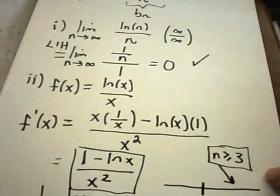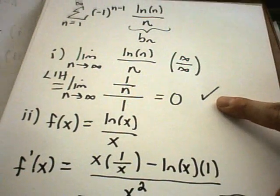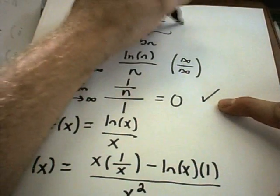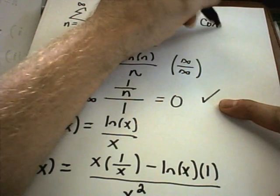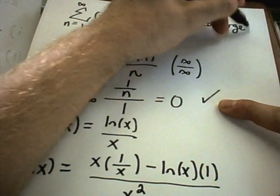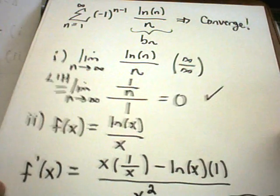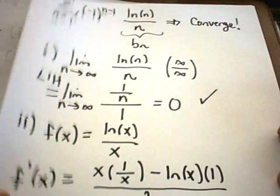I've shown it's decreasing. I've shown that the limit equals 0. And that now implies that this series does, in fact, converge. OK. Let's do one more example here.